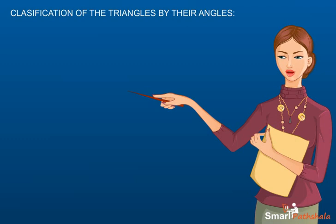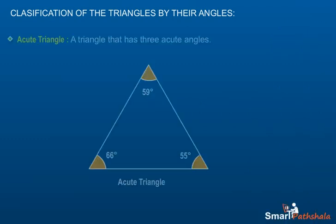Classification of triangles by their angles. Acute Triangle. A triangle that has three acute angles.